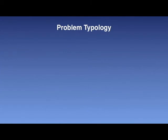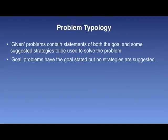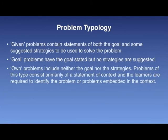Problems can be categorized into a variety of levels of complexity, depending on how much contextual information is given to the learners. Given and goal problems — again a reference to Watts (1991) — vary by the type of information given: given problems contain statements of both the goal and some suggested strategies to be used to solve the problem, and goal problems have the goal stated but no strategies are suggested. A third type, own problems — again a reference to Watts (1991) — include neither the goal nor the strategies. Problems of this type consist primarily of a statement of context, and the learners are required to identify the problem or problems embedded in the context.